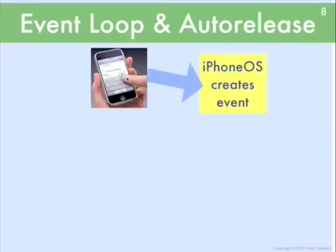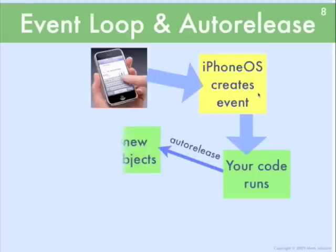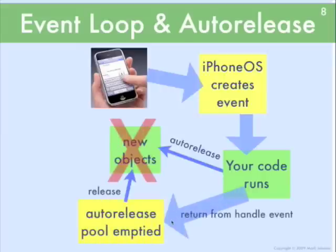An event happens when someone touches the screen. The iPhone operating system creates an event object and then calls your code passing that event object. Your code — probably a handler in a view controller — in the process of doing what it does, is going to create some new objects. If you have your code pass the auto-release message to those new objects, then those objects get added to the current auto-release pool. After your code has finished running, it returns from handling this event, and at this point the operating system has the auto-release pool emptied. When you send auto-release, it's like a promise that at the end of the event loop, release will get called on that object.